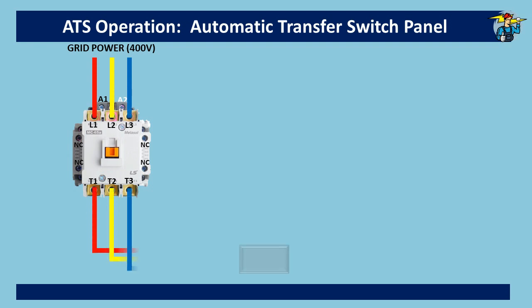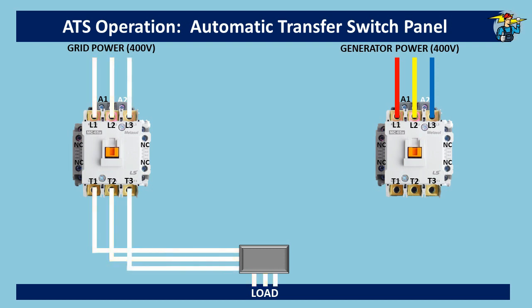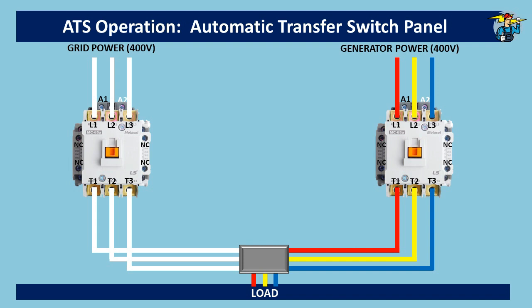When the grid contactor is in the ON position, the load is connected to grid power. If we start the standby generator, power will be available up to the L1, L2, and L3 terminals only, since the generator contactor is at the OFF position. If grid power goes off, we need to connect power from the generator to the load automatically, and vice versa.